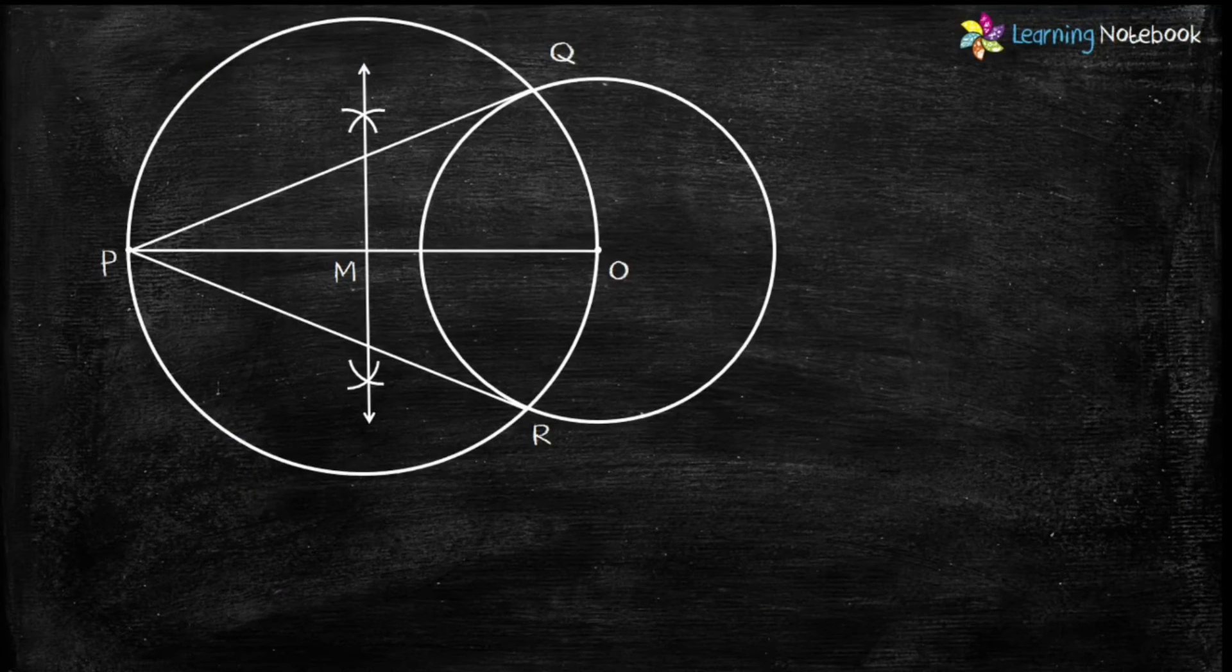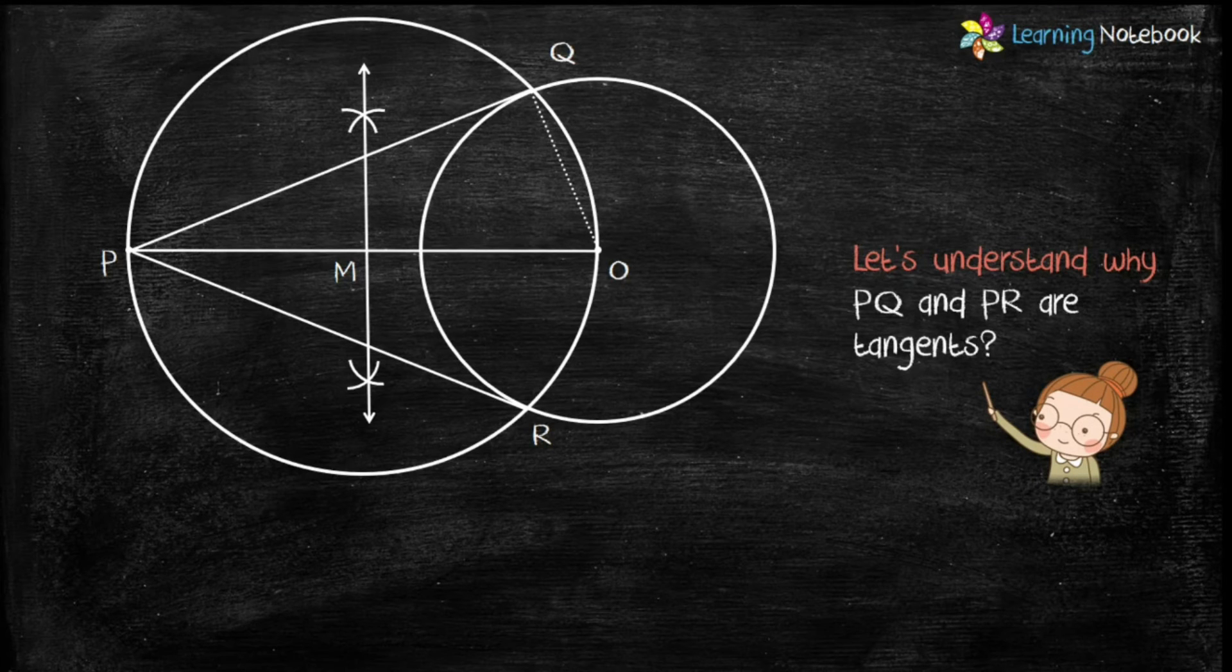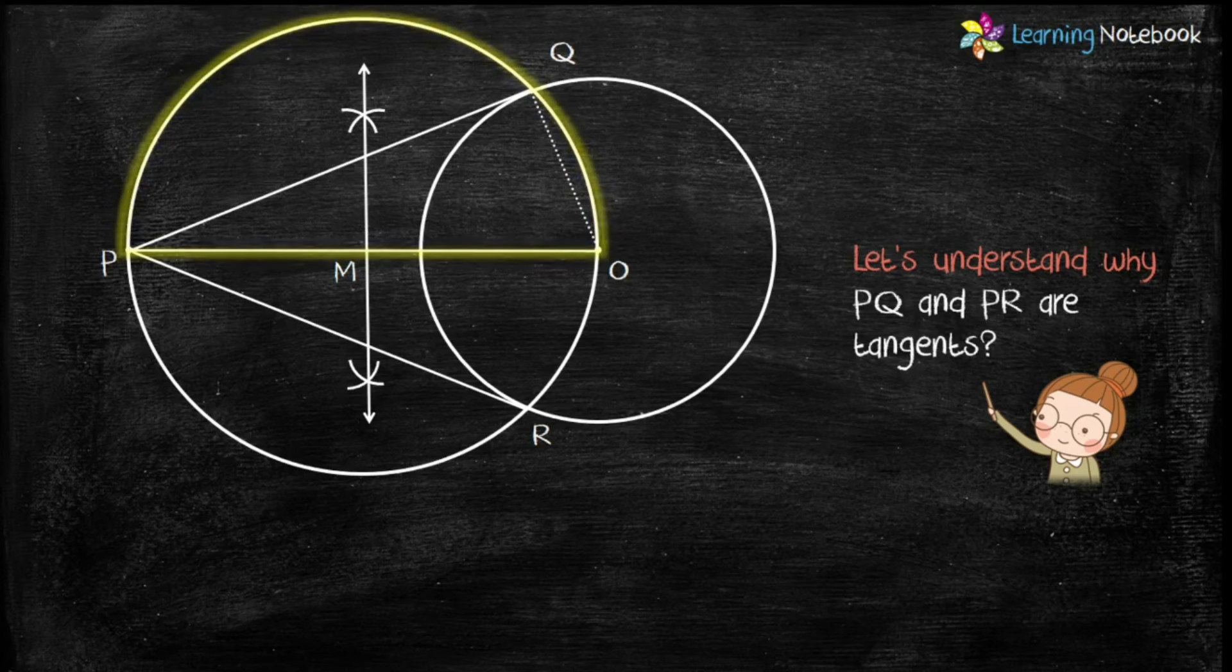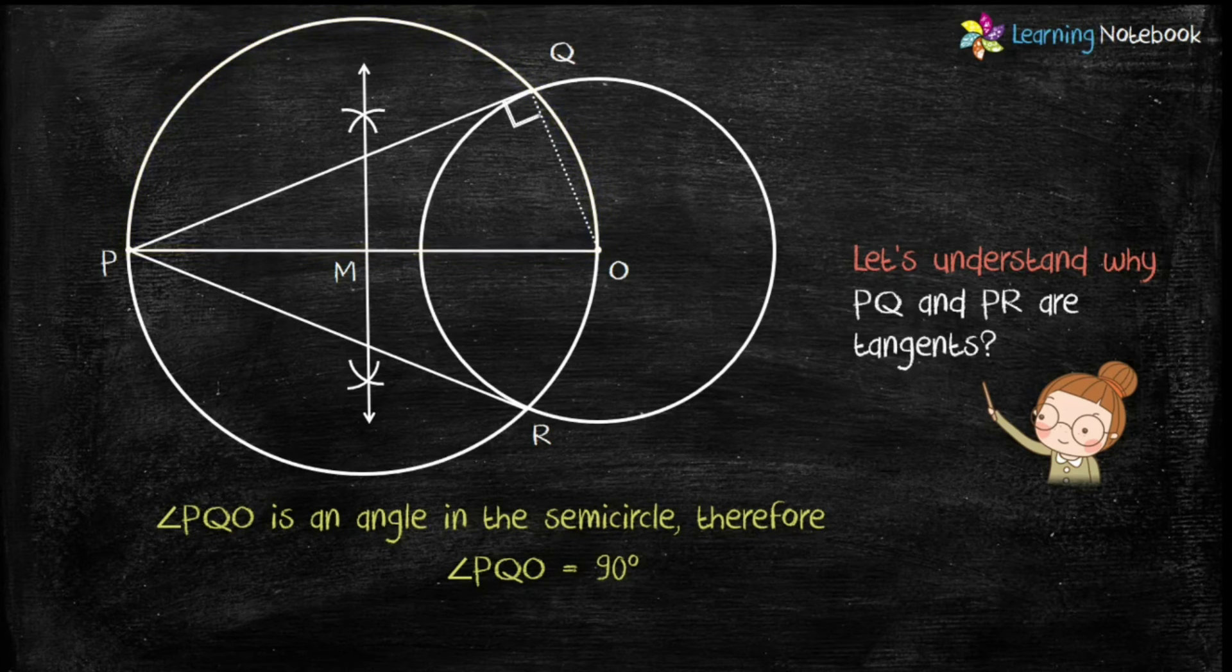Now let's understand why PQ and PR are tangents. For this, join OQ. Now students, notice that angle PQO is an angle in the semicircle. Therefore, angle PQO equals to 90 degrees. This implies PQ is perpendicular to OQ.